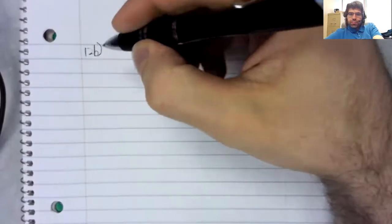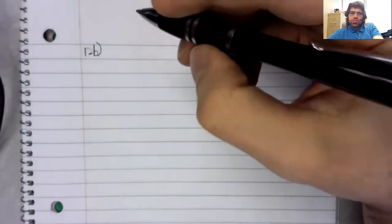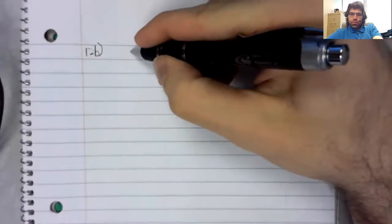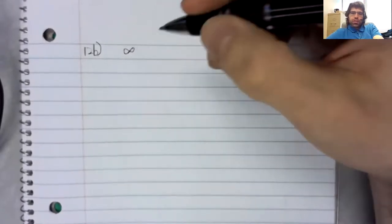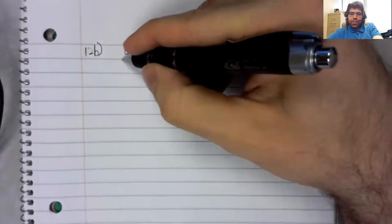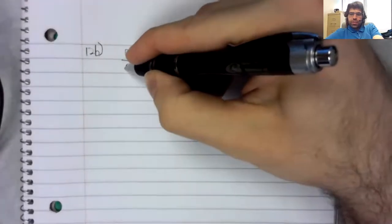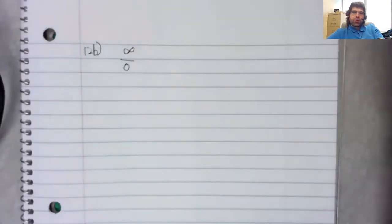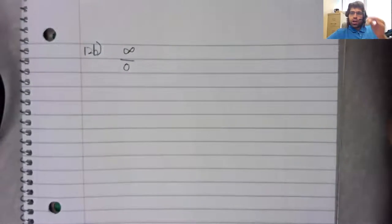For 12b, as x goes to zero, the numerator is going to infinity. The denominator is going to zero.